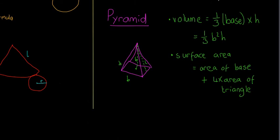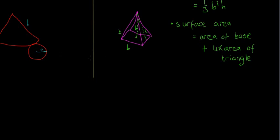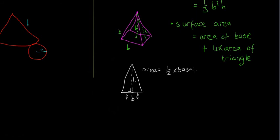The surface area of the pyramid is the area of the base plus four times the area of one triangular face. Looking at one triangular face — an isosceles triangle — we have l as the slant, B as the base, and B over 2 on each side. The area of that triangle is half by base by height, so it's half by B by l.